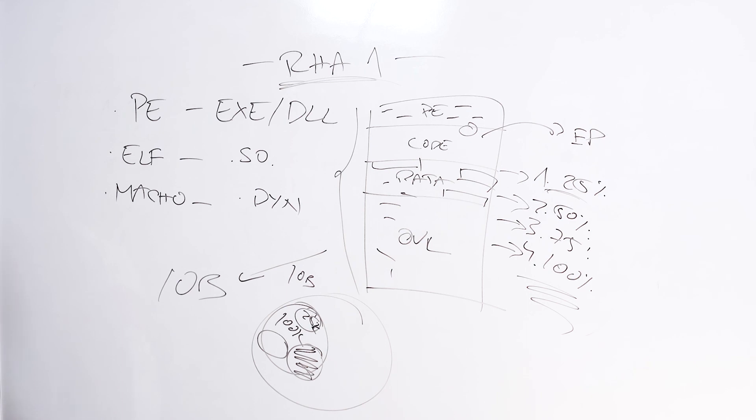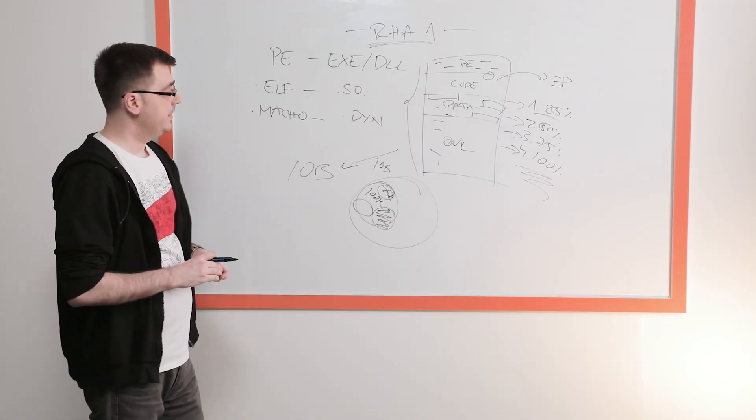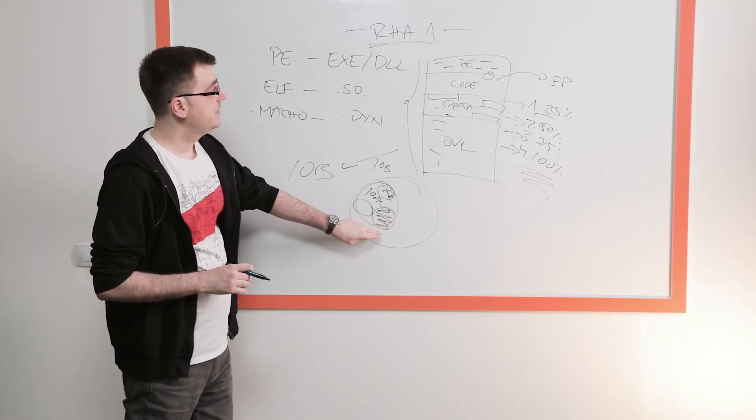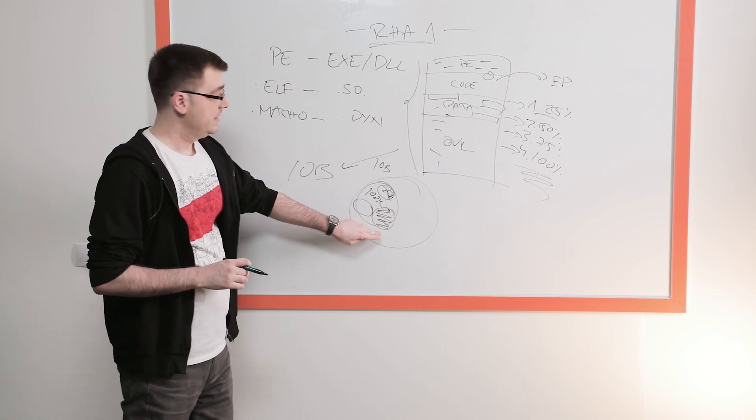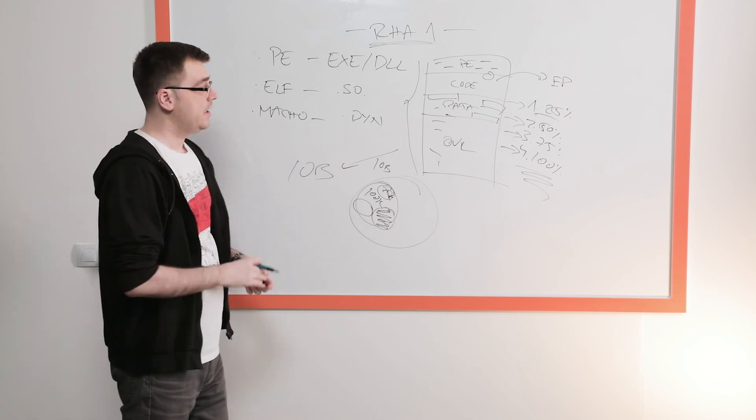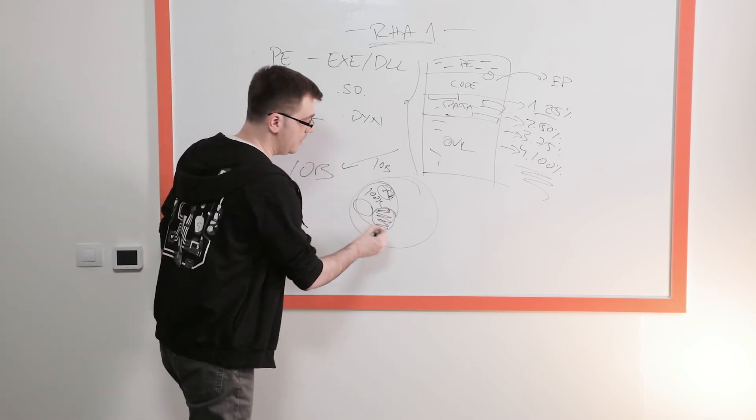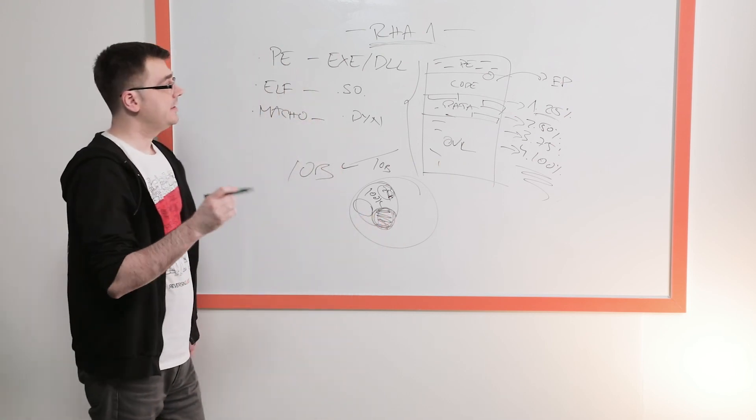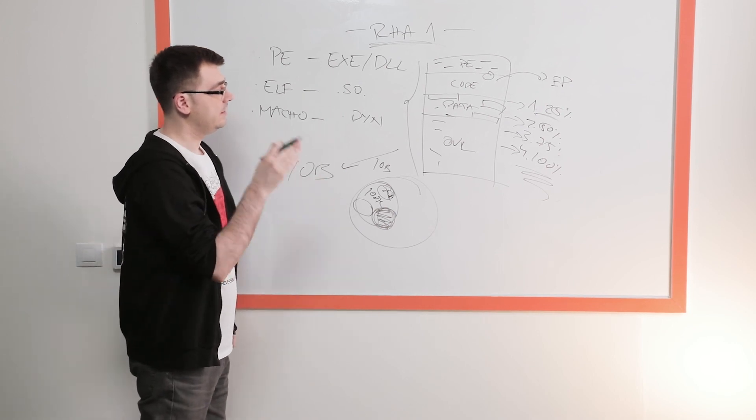Reversing Labs does this by itself and products we ship come with an offline database. We have a couple of hundred thousand different hashes within the database.